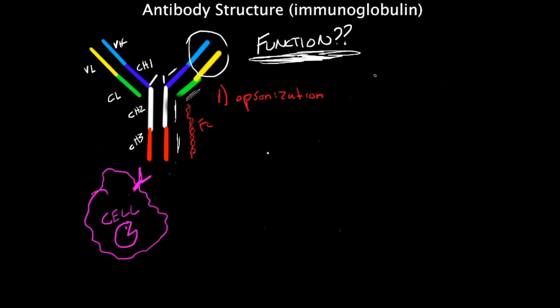Next you have complement activation. Number two. Now what pathway would antibodies activate? Remember the only pathway that uses the adaptive immune system is the classical pathway.